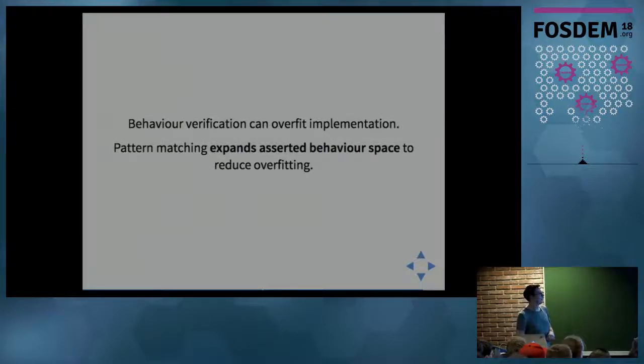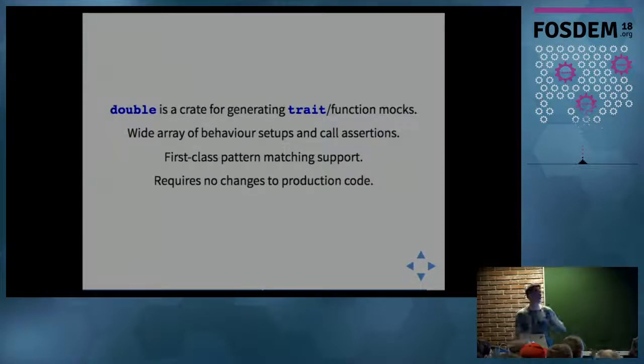Double is a crate that generates these traits and functions. There's a wide array of behaviors and setups. I only actually covered a very small subset of the overall set of features. It has first class pattern matching support. That was the biggest reason I actually made this library - pattern matching and Rust stable. It requires no changes to production code, but that does come at a cost.